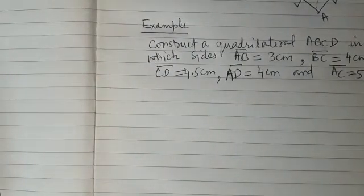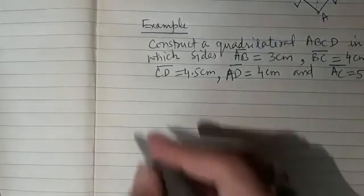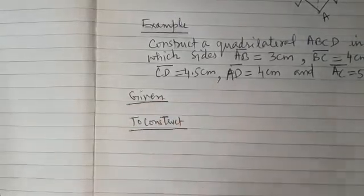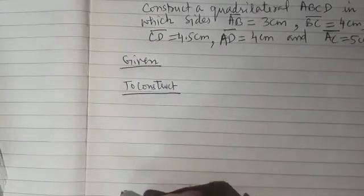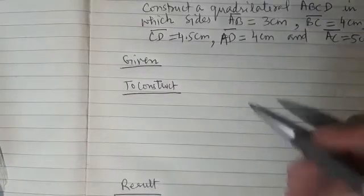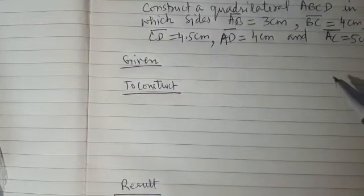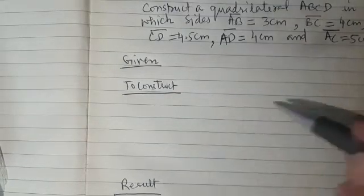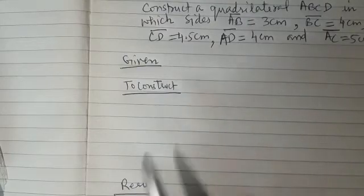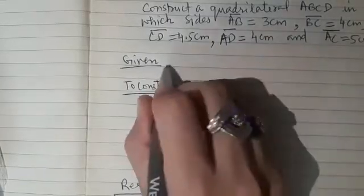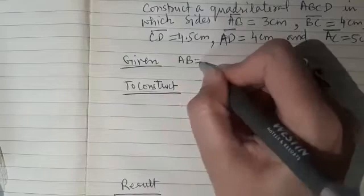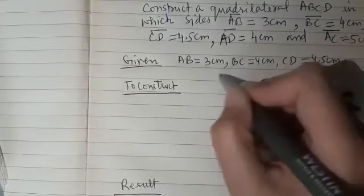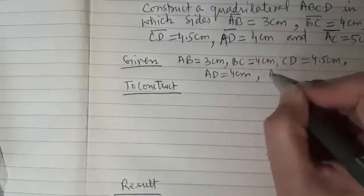When a question on construction is asked in the examination, be very careful. If it is asked to write the steps of construction, please write them. Otherwise, you just need to write down what is given, what is to construct, then do the construction, and at the end write the result. Remember, if steps are not asked, write what is given, what is to construct, the result at the end, and do a neat construction. In this question, under 'Given' you write: AB = 3 cm, BC = 4 cm, CD = 4.5 cm, AD = 4 cm, and AC = 5 cm.